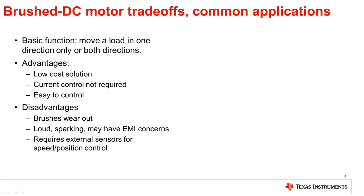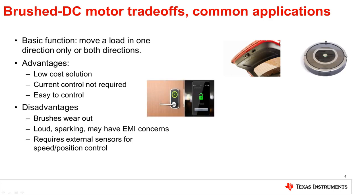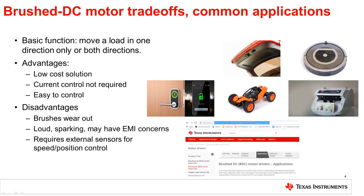Some common applications using Brush DC motors are smart meters, automotive lift gates and windows, vacuum robot wheels and brushes, smart locks, electronic and robotic toys, currency counters, and many more. Check out our Brush DC applications page to discover more uses for Brush DC motors and our key TI products designed to drive these systems.